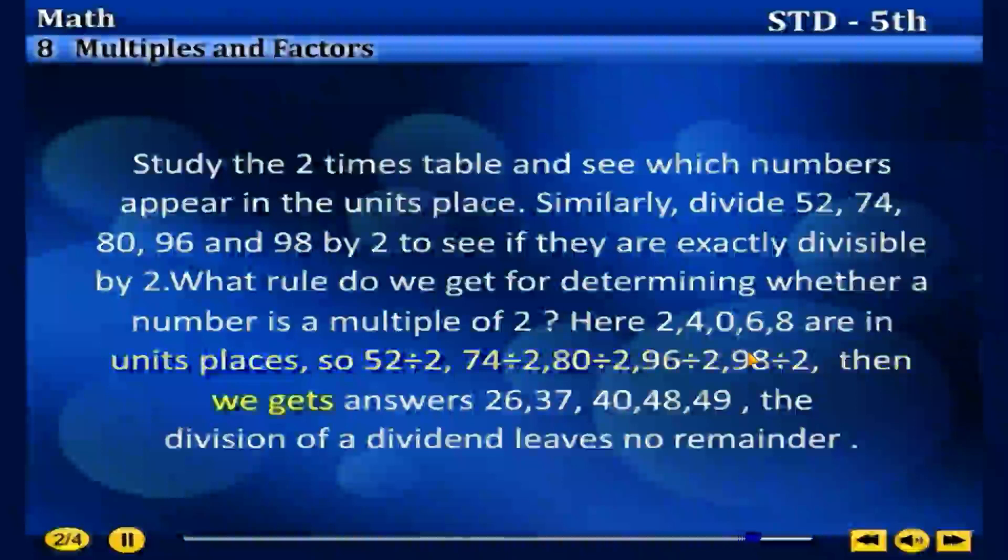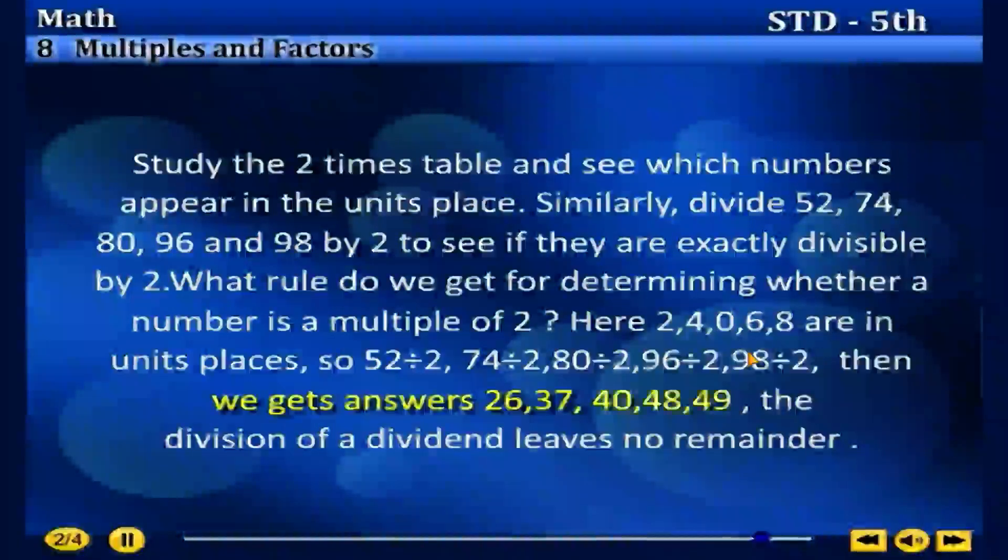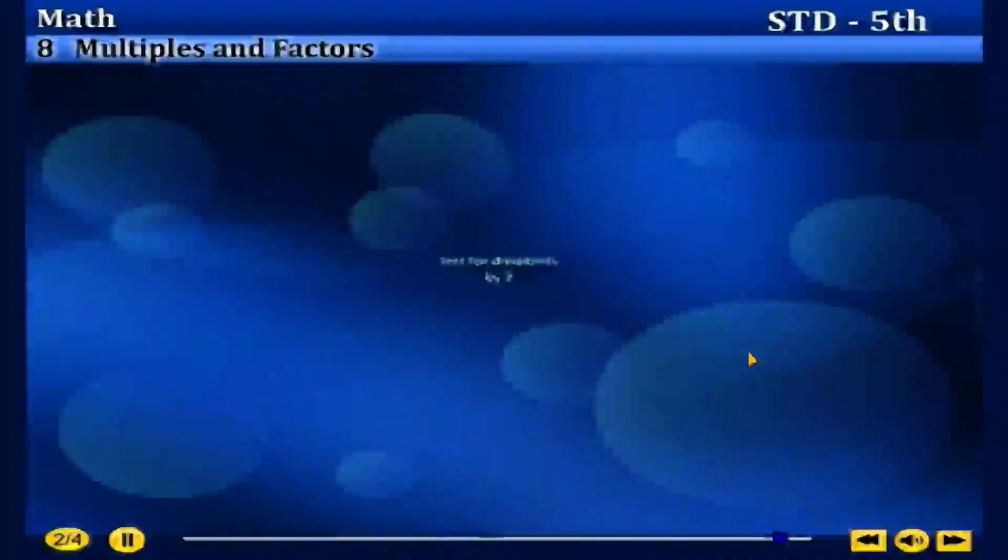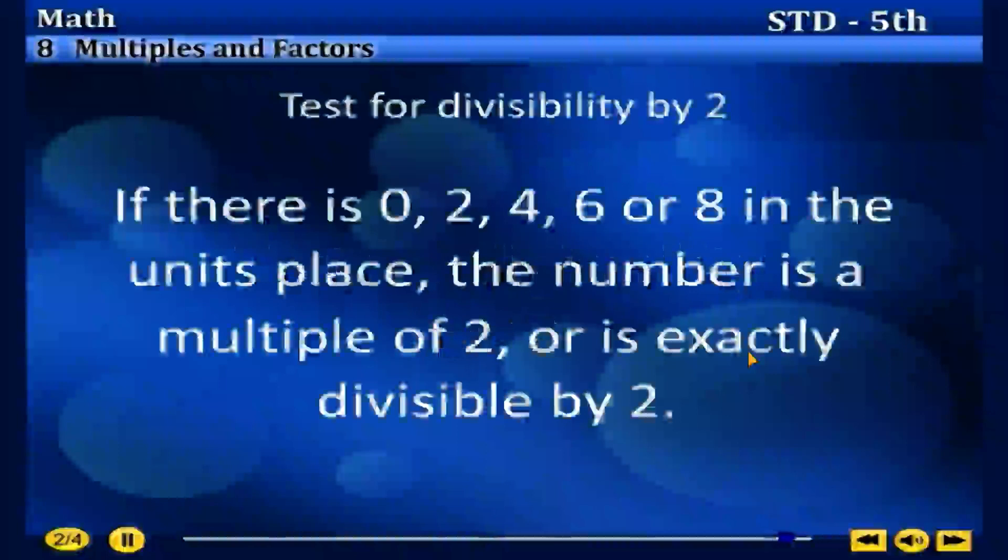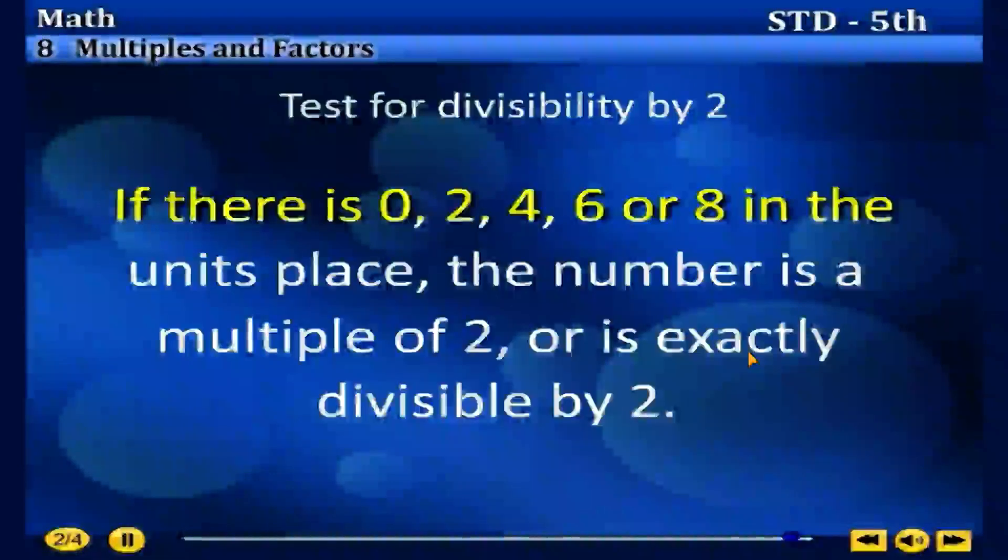Then we get answers 26, 37, 40, 48, 49. The division of the dividend leaves no remainder. Test for Divisibility by 2: If there is 0, 2, 4, 6, or 8 in the unit's place, the number is a multiple of 2, or is exactly divisible by 2.